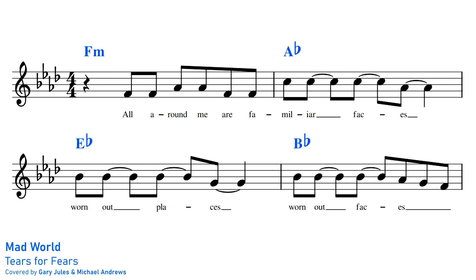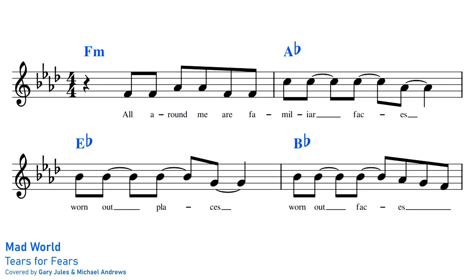Dorian sounded whimsical and intriguing. To put it crudely, Dorian is like a less sad minor scale. A song that is entirely written in Dorian is Mad World by Tears for Fears, later covered by Gary Jules. What I love about Mad World is that in the verses, the Dorian sound is only present in the chords, and not the melody. We have the Dorian raised sixth note, the D Natural, in this Bb chord here.